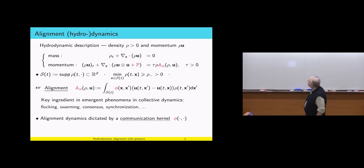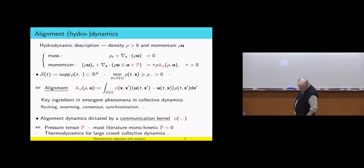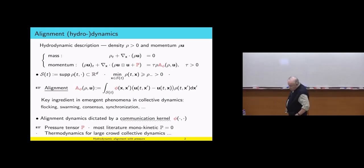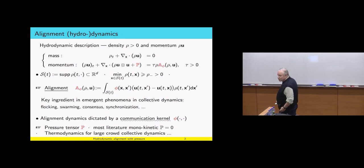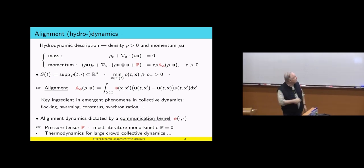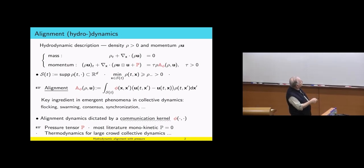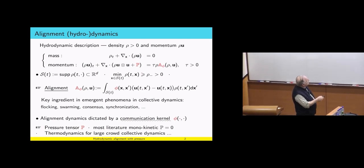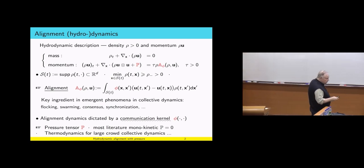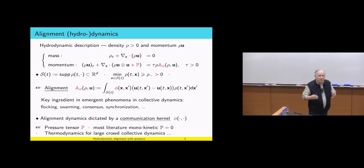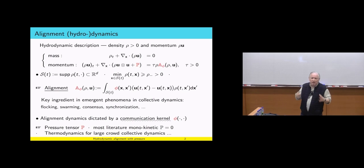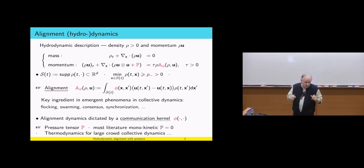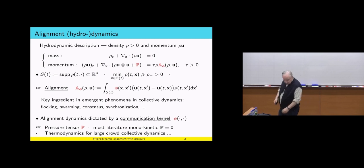The dynamics is essentially dictated by this communication kernel — that is the key element I did not have time to elaborate yesterday. Now, what about the pressure? Most of the literature assumes a monokinetic closure because it describes the thermodynamics for large crowds. The truth of the matter is that there is no clear understanding of what the thermodynamics of a large crowd should be in the case of collective dynamics. That is the main difficulty we are facing.